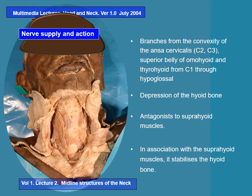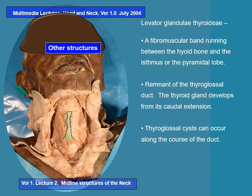In terms of embryology, these are comparable to the anterior wall muscles of the abdomen, namely the rectus muscle of the abdomen — they are more or less in the same plane. The structure known as the levator glandulae thyroidae is a fibromuscular band running between the hyoid bone and the isthmus or pyramidal lobe. It is a remnant of the thyroglossal duct, from which the thyroid gland develops by caudal extension. Importantly, thyroglossal cysts can occur along the course of this duct.